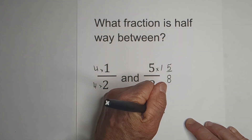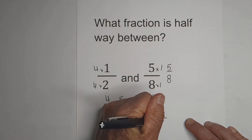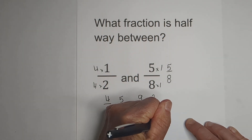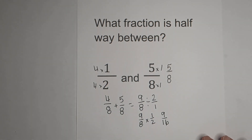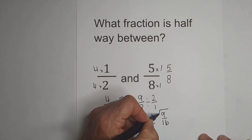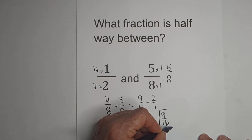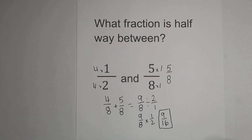9 times 1 is 9, and 8 times 2 is 16. So the fraction that is right in between — halfway between 1 half and 5 eighths — is 9 sixteenths.